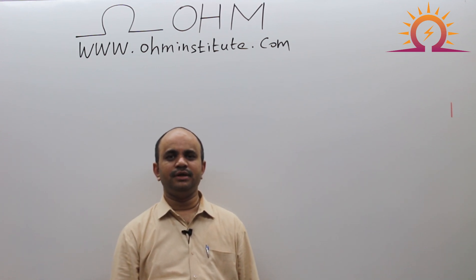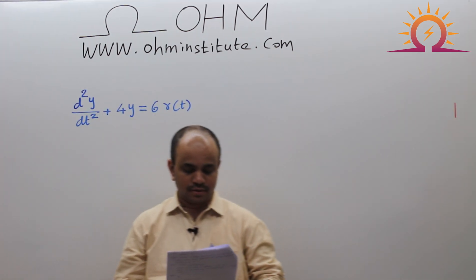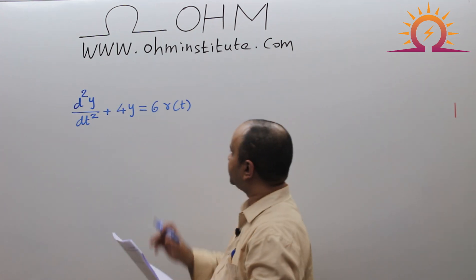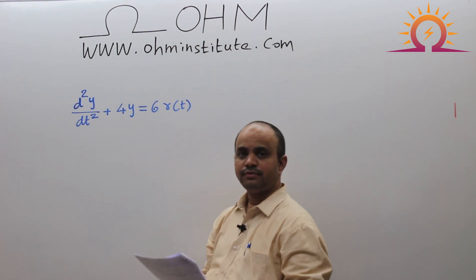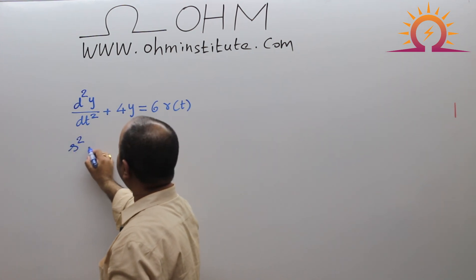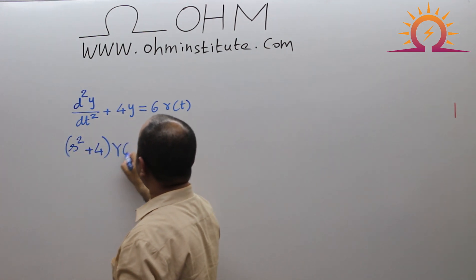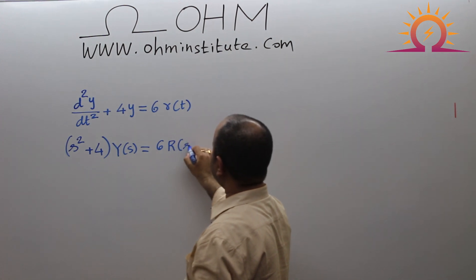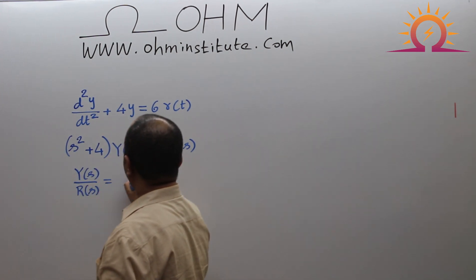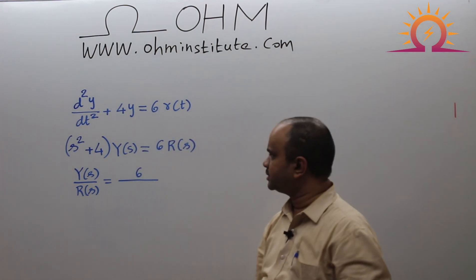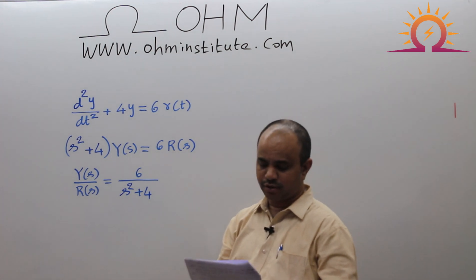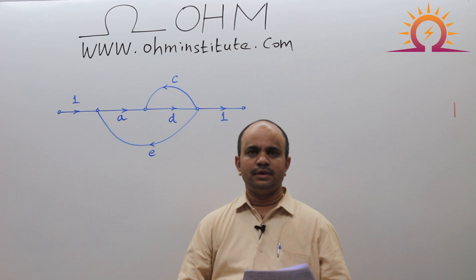This question from control systems is for one mark. One linear time-invariant system is given — r(t) is input and y is output. We need to find the location of the poles. If you write the Laplace transform on both sides, we get s² + 4 multiplied by Y(s) equals 6 times R(s). Therefore the transfer function is Y(s)/R(s) = 6/(s² + 4), and hence the location of the poles are at ±2j. That is the answer.